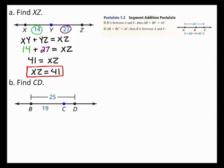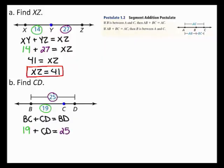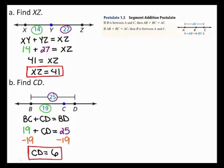In part B, point C is between B and D. So, by the segment addition postulate, the length of segment BC plus the length of segment CD equals the length of segment BD. From the diagram, the length of segment BC is 19 and the length of segment BD is 25. To find the length of segment CD, you can subtract 19 from both sides of the equation. This gives you the length of segment CD equals 6. Therefore, the length of segment CD is 6.